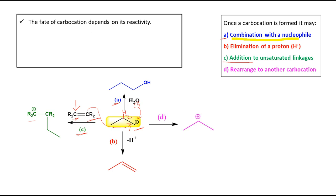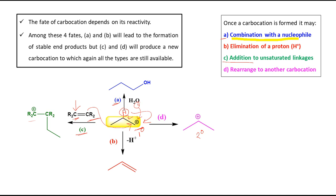The fourth possibility is rearrangement to a more stable carbocation. In this example, we have a primary (1°) carbocation. After rearrangement, the positive charge can be generated at the middle carbon, making it a secondary (2°) carbocation. A hydrogen shifts to the terminal positive charge, and the positive charge is generated at the carbon from which the H was removed. Rearrangement occurs when it leads to a more stable carbocation.